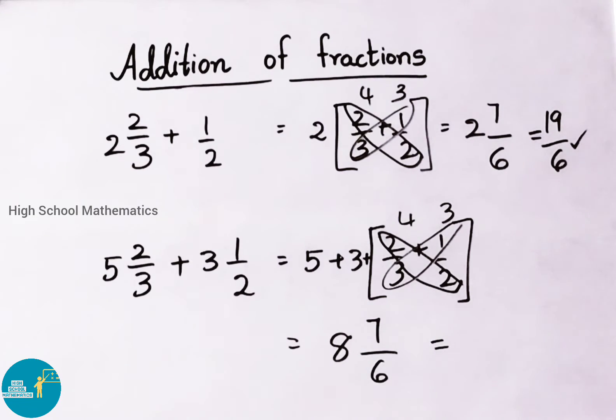This mixed fraction we can convert to improper. 6 times 8 is 48. 48 plus 7. That is 55 by 6. So the answer is 55 by 6.